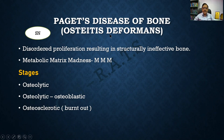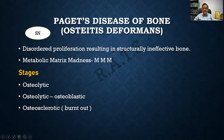Paget's disease is also called osteitis deformans. It is a disordered proliferation resulting in a structurally ineffective bone — ineffective in the sense that it is not able to support. It is also described by three M's: Metabolic, Matrix, and Madness. Please remember this — disordered proliferation, metabolic, matrix, madness.